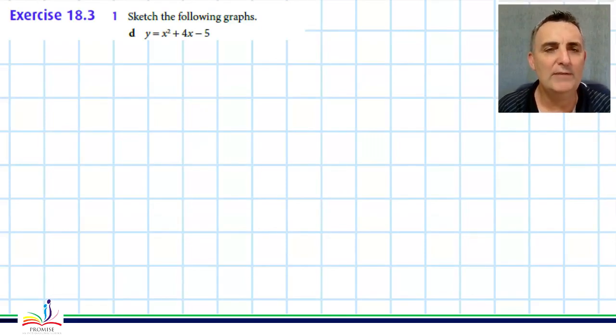Okay, so we're asked to sketch a graph of y equals x squared plus 4x minus 5, and to do that we need to find the important points: the intercepts, the axis intercepts, and the turning point.